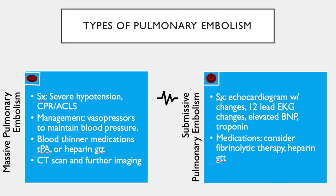Vasodilators such as nitroprusside may be used to decrease pulmonary artery pressure. Other medications considered include blood thinners like TPA or a heparin drip. A massive PE typically results in a code where CPR and ACLS — advanced cardiovascular life support — is initiated.